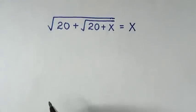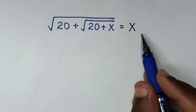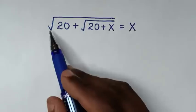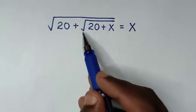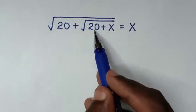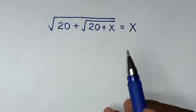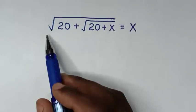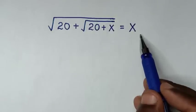Hello, you are welcome to solve this math problem which is: square root of 20 plus square root of 20 plus x, is equal to x. We need to find the value of x from this equation.